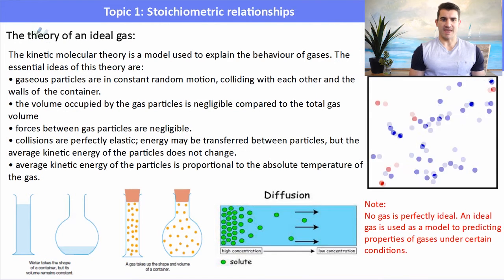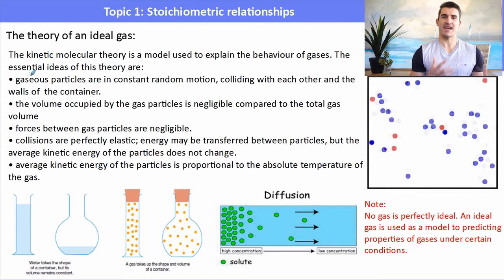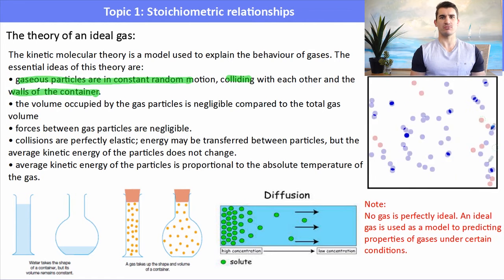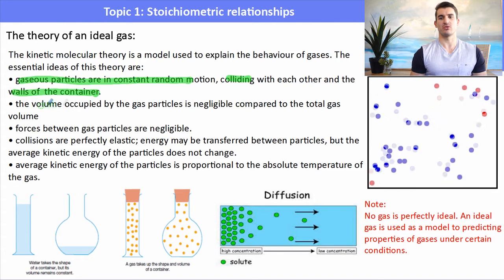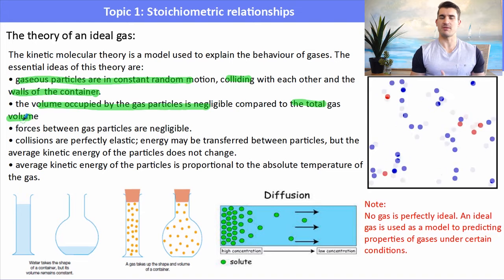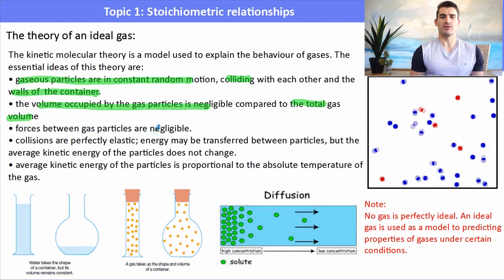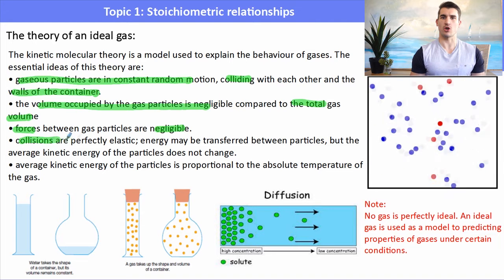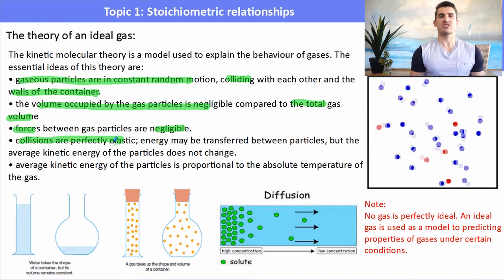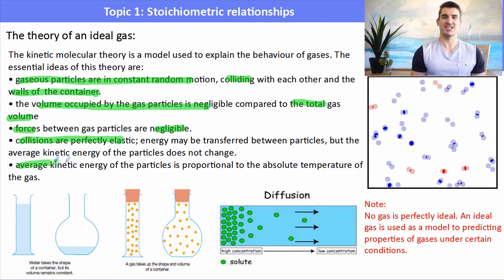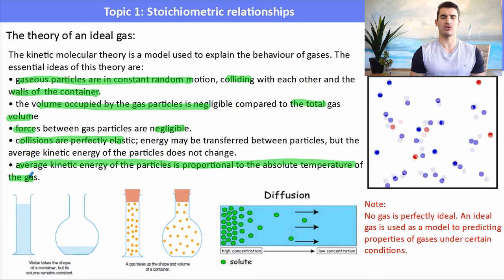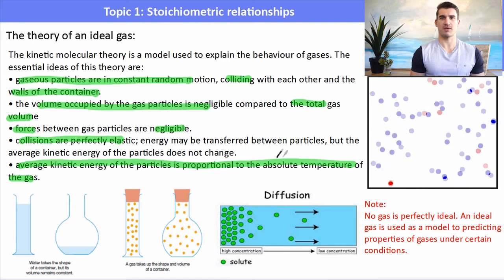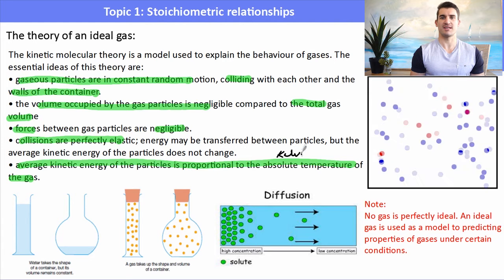So what is the theory of a gas? Well, the kinetic molecular theory is how we explain the behavior of a gas. We say that the gas particles are in constant random motion, colliding with each other and the walls of the container — you can see on that little diagram that they bump into each other and the walls. The volume occupied by the gas particles is very small compared to the total volume of the container. We also say that the forces between the gas molecules are negligible. The collisions are elastic — that is, no energy is lost — and the average kinetic energy, or how fast the particles move, is proportional to the temperature.